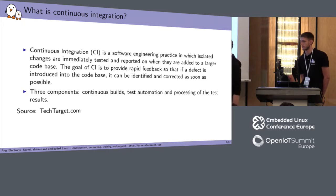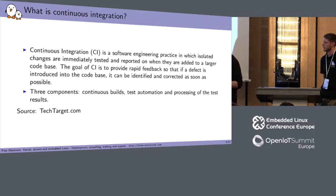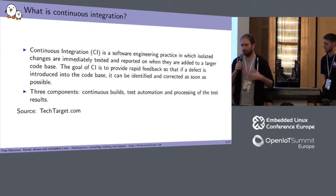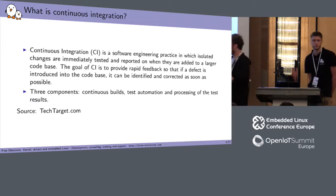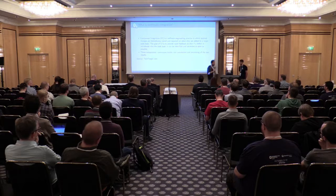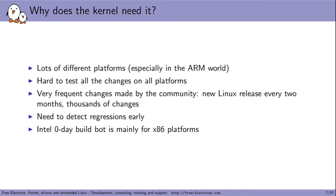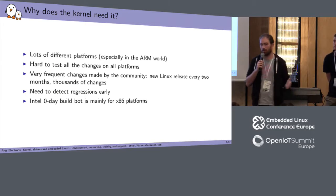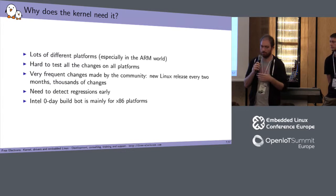In a continuous integration system, there are three main components. Basically, you have continuous build, a test automation part, and then processing of the results. Why do we need it? In the Linux community we have many different platforms supported by the Linux kernel, especially true for ARM, because we have many SoCs that can share some IPs. If I make a change in one driver, that can impact other platforms that I may not be able to test myself.